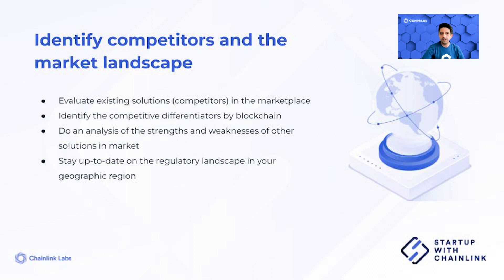When evaluating competitors, make sure to differentiate them by blockchain. Some products may be chain-specific, whereas others could be chain-agnostic, so give more weight to products that exist on the chain you're building for. The most important point is to map out your competitors' strengths and weaknesses and identify areas where you can differentiate yourself. Products with little differentiation always face tough competition and have a hard time gaining user traction. Also pay close attention to the ever-evolving regulatory landscape in your geography.